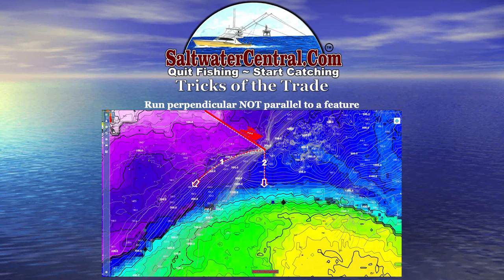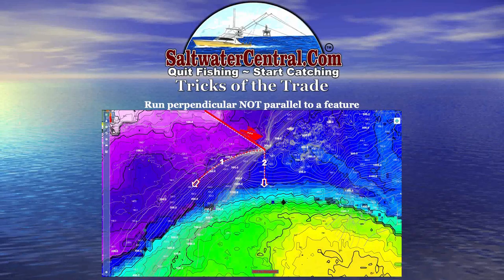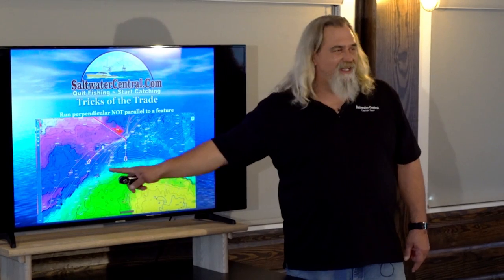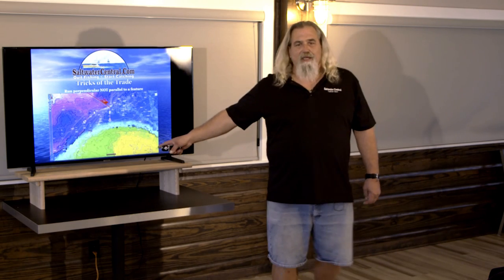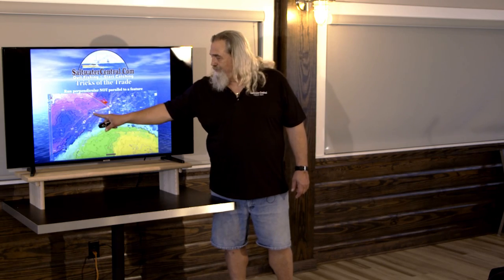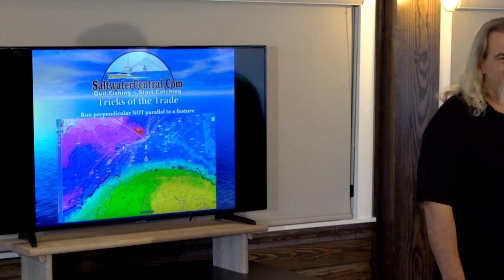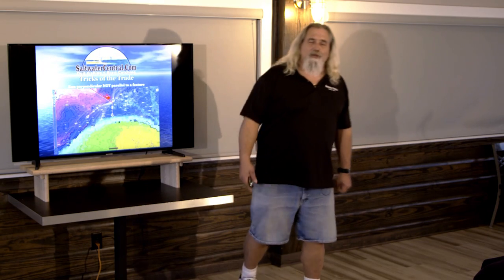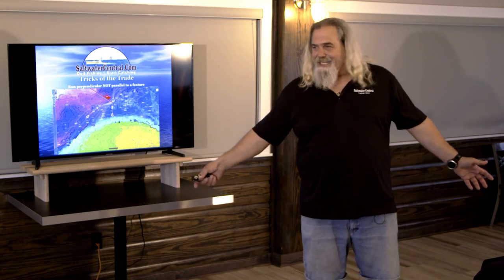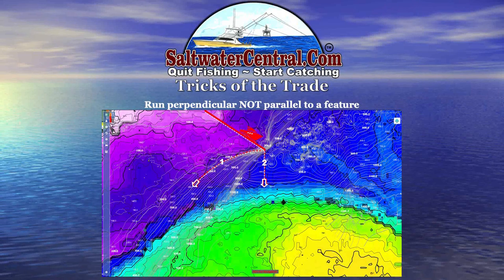Run perpendicular, not parallel. No matter what data set you're looking at, no matter what feature you're trying to find — always, always, always run perpendicular to it. If you run parallel, you're liable to never find it. Here's Georgetown Hole from last night. Look at the edge of that beautiful eddy. A fellow gets to Georgetown Hole and starts trolling down the 300-foot line — is he ever going to find that edge? He might hit it late in the day, but it's going to be a while. Instead, turn due south until you hit it. That's what we did in route number two — run perpendicular, and by golly you will hit it.